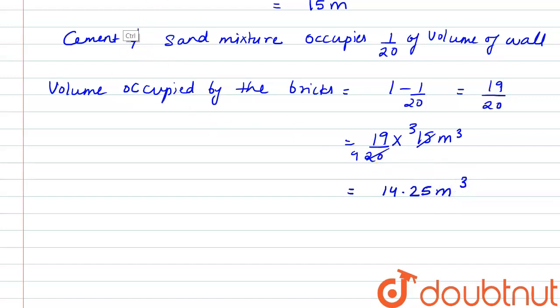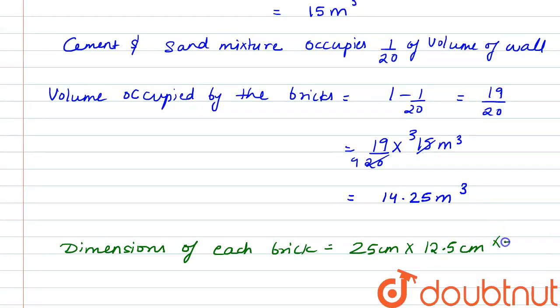Now we are given the dimensions of the brick. So we have dimensions of each brick as 25 centimeter multiplied by 12.5 centimeter multiplied by 7.5 centimeter.